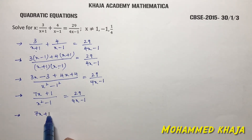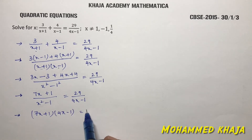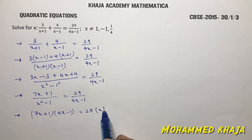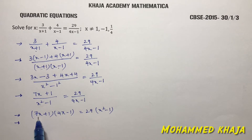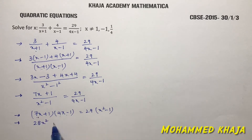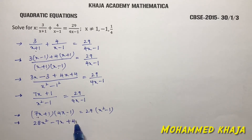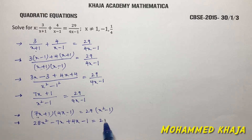Cross-multiplying: (7x + 1)(4x - 1) = 29(x² - 1). Expanding the left side: 7x × 4x = 28x², 7x × (-1) = -7x, 1 × 4x = 4x, 1 × (-1) = -1. The right side gives 29x² - 29.